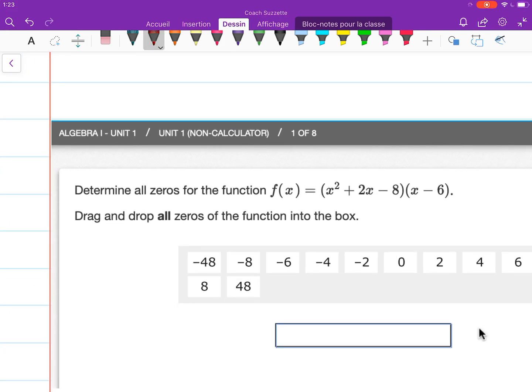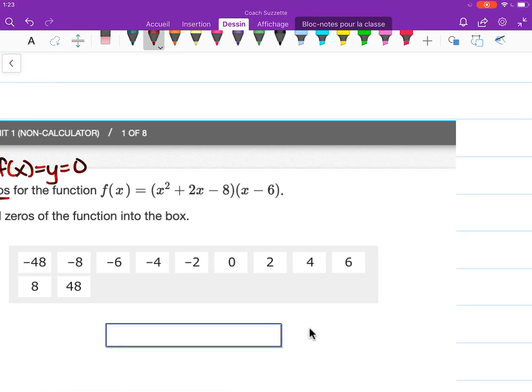Whenever we're asked to find the zeros of a function, that's another way of asking us to find all of the x-intercepts. So, since we know that f(x) is equal to y, x-intercepts occur when we have y equal to 0.